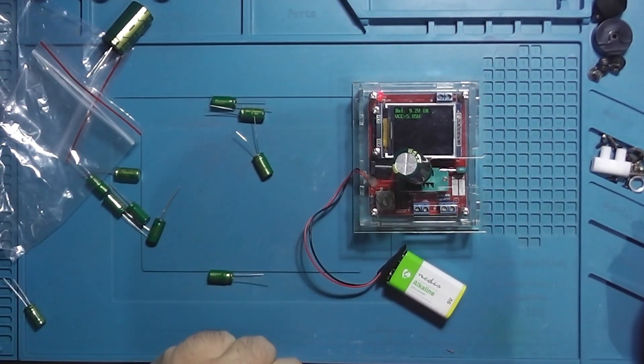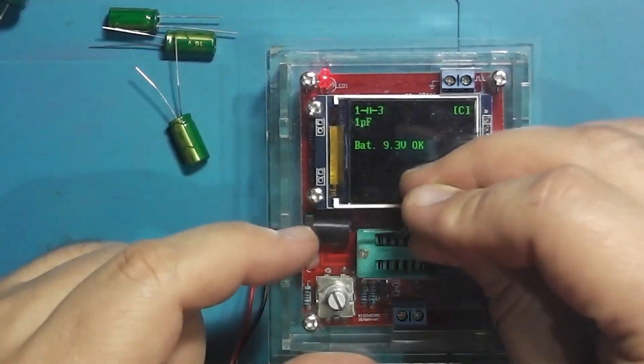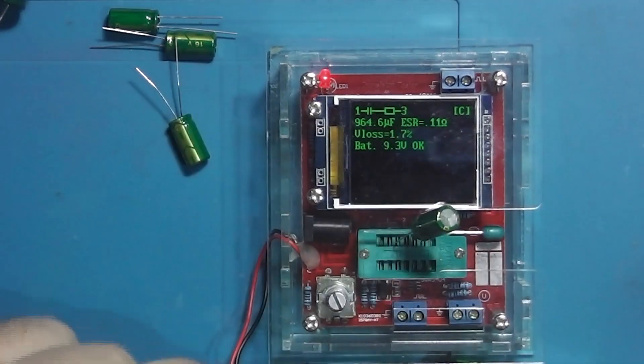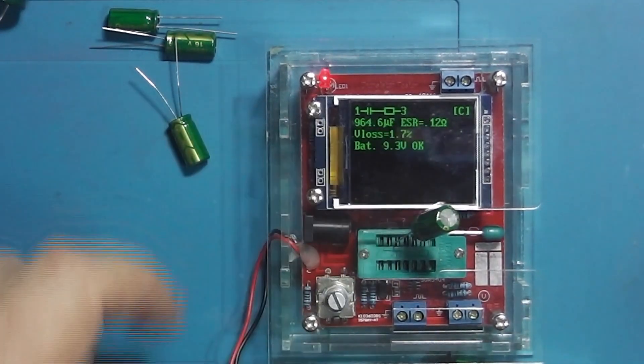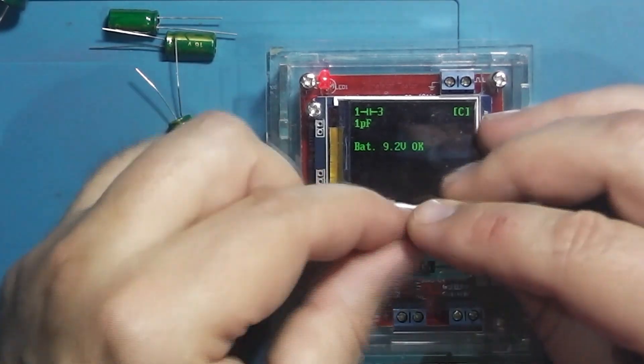However, even though they have the same rating and manufacturer, their results are slightly different. Let's check the smaller one but with a higher capacitance, the 1000 microfarad. All of them are showing 0.1 ohm ESR and a similar capacitance.